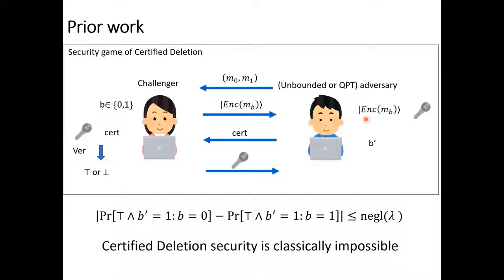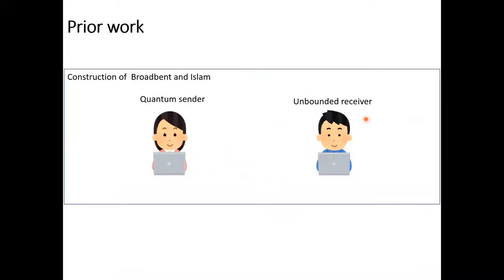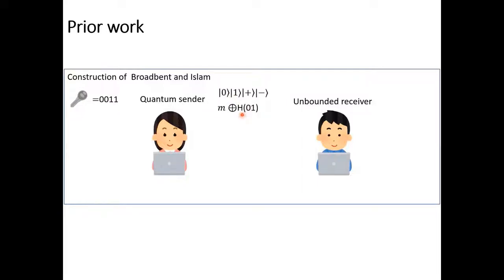They construct this primitive using BB84 states. For ease of explanation, I explain the construction where the sender sends only 4 qubits. First, she generates a random classical bit string as a secret key. After that, she randomly generates a computational basis quantum state. Then, she operates a Hadamard gate on them according to this classical bit string. After that, she encrypts the message m using the information of bit values of the computational basis state, where H is a hash function, and this 0 corresponds to this 0, and this 1 corresponds to this 1.